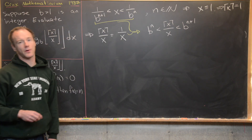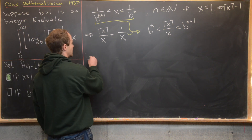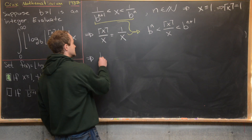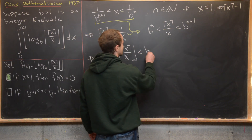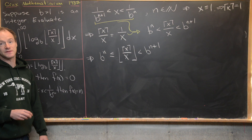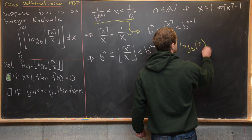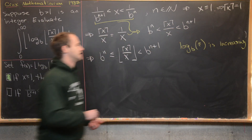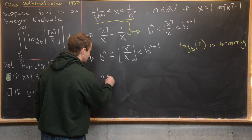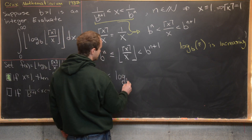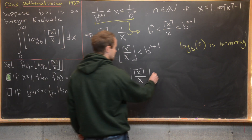Next, we take the floor of the inner part. Taking the floor can't push us past the left endpoint, so the strict inequality becomes non-strict: b to the n is less than or equal to the floor of the ceiling of x over x, which is less than b to the n plus one. Taking log base b of all parts — using the fact that log base b is an increasing function — gives n is less than or equal to the log base b of the floor of the ceiling of x over x, which is less than n plus one.